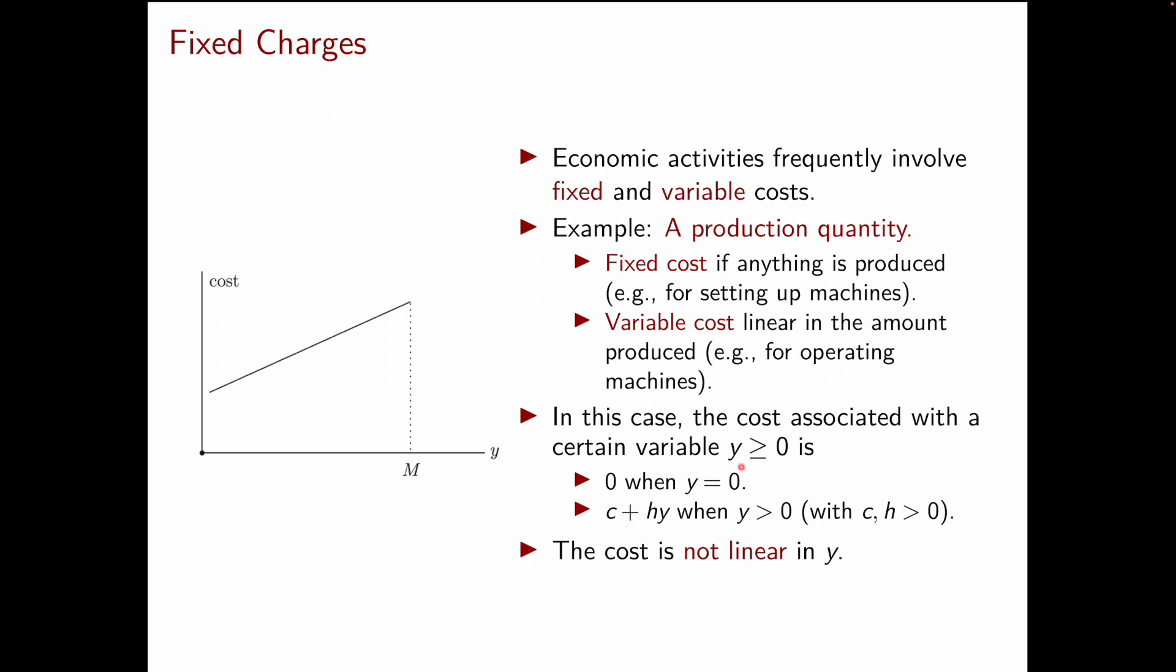If we use a variable y, non-negative, to model the amount of the good that you produce then the total cost of production will be zero if y equals zero and as soon as y is strictly positive then it will be c plus hy where c is your fixed cost and hy is your variable cost.